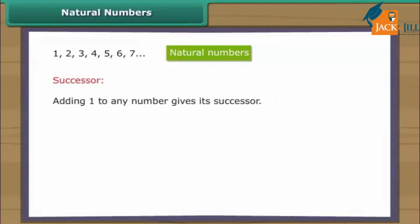Natural numbers. We use one, two, three, four to count objects. Counting numbers are also known as natural numbers.